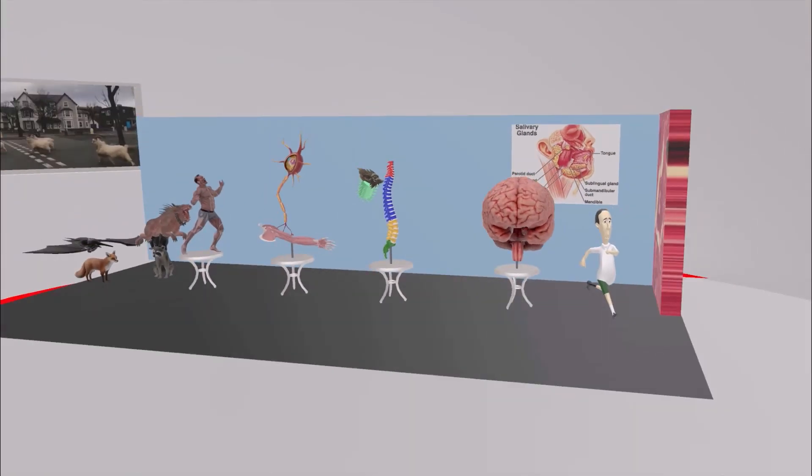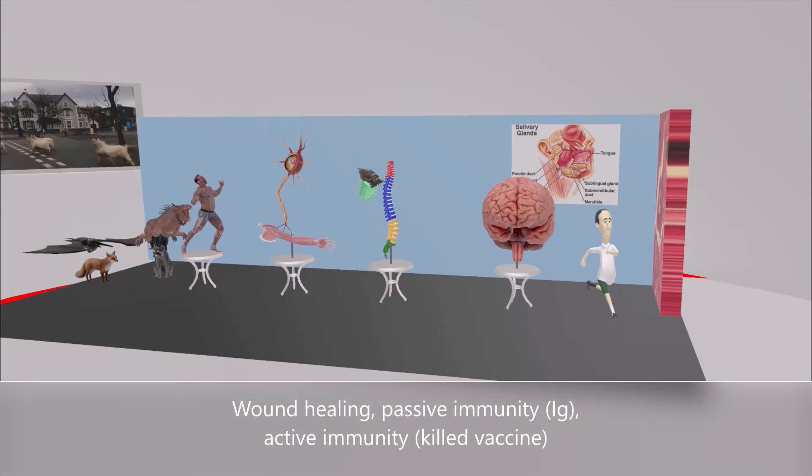Let's just end off this scene with a word about treatment. So it's important to get treatment way before symptoms arise, as when symptoms arise, especially the major symptoms, the disease is usually fatal. But post-exposure treatment involves wound healing, as well as passive immunity by giving the human rabies immunoglobulin, as well as a killed vaccine in order to develop active immunity.